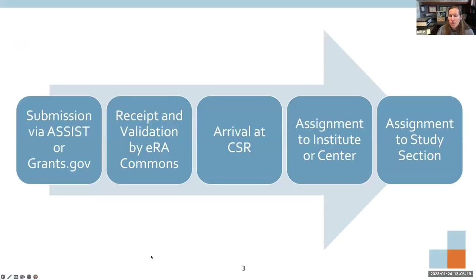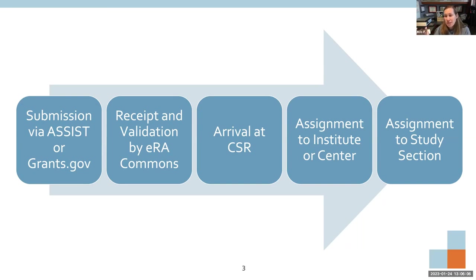First, an overview of what happens to your application after you submit it. You'll either prepare your application in grants.gov or — I recommend — NIH's platform called ASSIST, which you access via eRA Commons. Once submitted, it's received and validated by NIH in eRA Commons, then shipped to the Center for Scientific Review, which assigns it to a particular institute or center within NIH and to a study section.